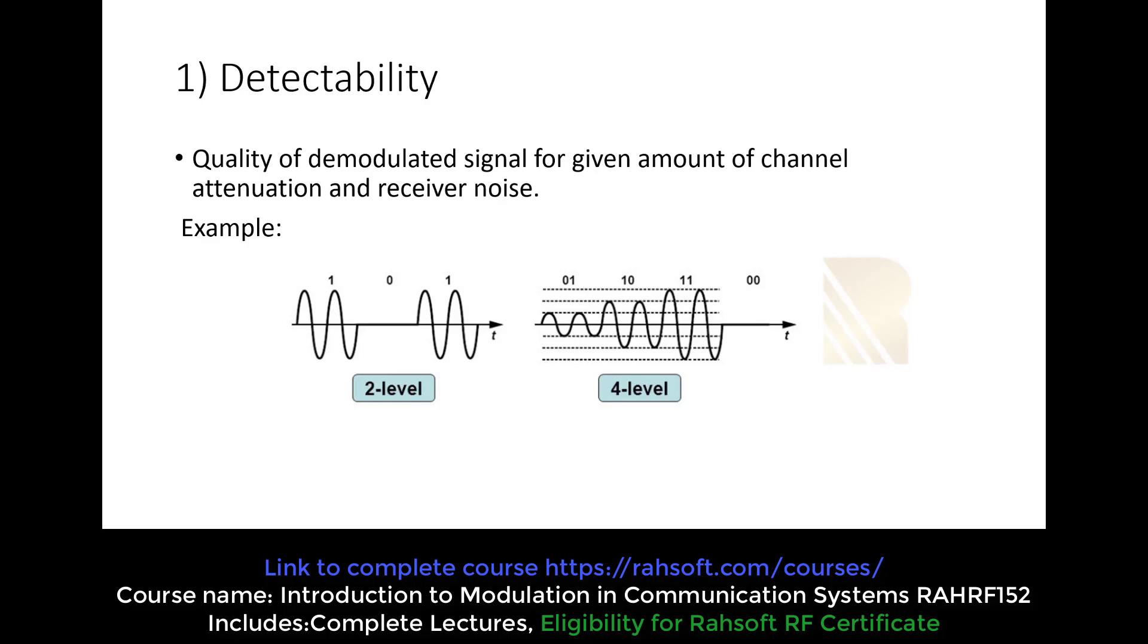On the left side we can say we have less information in this kind of modulation. Why? Because we are just sending 1 and 0. At the right side we have more information. If we use this kind of modulation we will be able to send more information. But what is the problem?